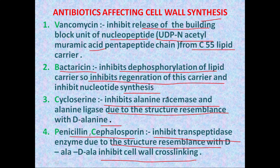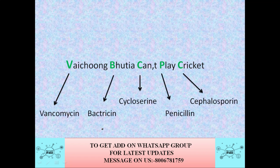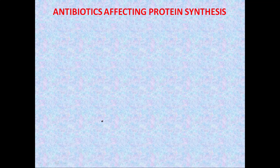Penicillin and cephalosporins inhibit the transpeptidase enzyme due to structural resemblance with D-alanine-D-alanine, hence inhibiting cell wall cross-linking. A trick to remember which drugs affect cell wall synthesis: note the first letters V, B, C, P, C — 'Waichung Butiya Cannot Play Cricket.'